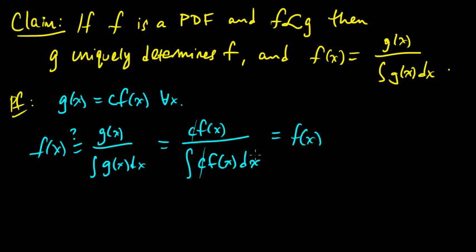And that equals f of x, so we verify that this is indeed the case. So we can check that off. That's just a simple fact. You could have any other function h that was proportional to f — it would have a different constant, but the constant always cancels and you end up with f just the same way. So that's just a simple little fact.